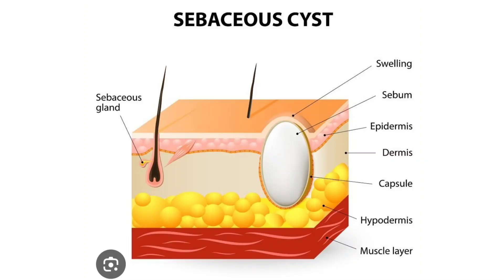Look at this image — this is a sebaceous cyst. Sebaceous glands are usually found in the dermis, and if blocked with sebum or keratin, it swells up. You can appreciate the swelling, and inside you can see the sebum. The epidermis layer is visible, then the dermis is visible. This cyst is predominantly arising from the dermal layer and has its own capsule. Below there is hypodermis and muscle layer.